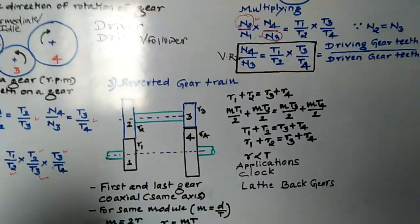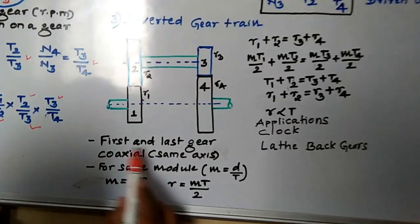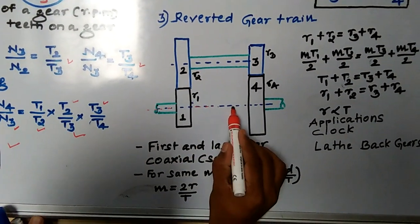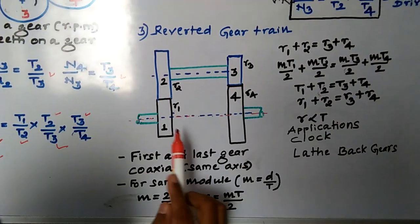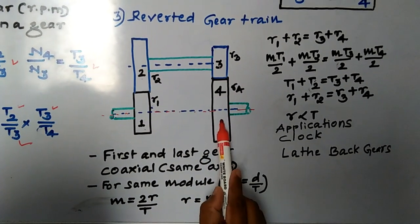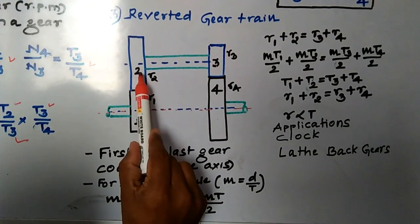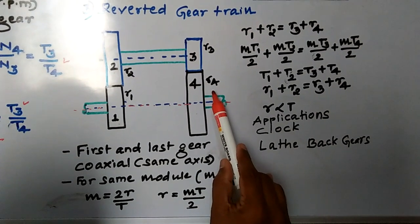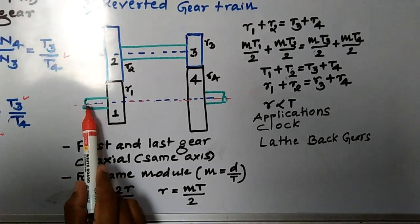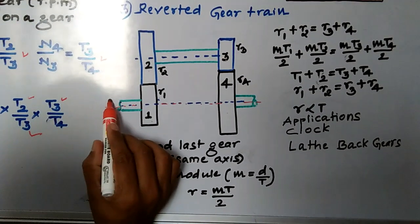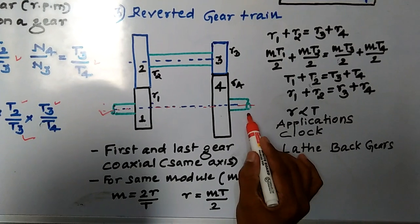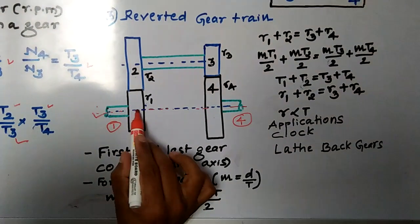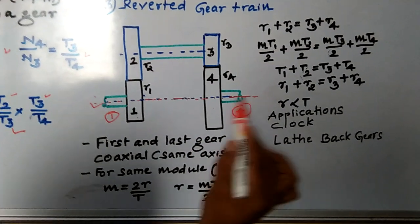Now I will come to the third type — the reverted gear train. In a reverted gear train, the first gear and last gear are coaxial, meaning they are on the same axis. Look at the figure — I have taken four gears: gear 1, gear 2, gear 3, gear 4, with radii R1, R2, R3, and R4 respectively. I have marked in red that both the first and last gears are coaxial — they share the same axis.